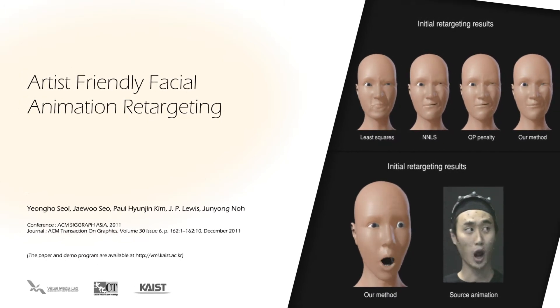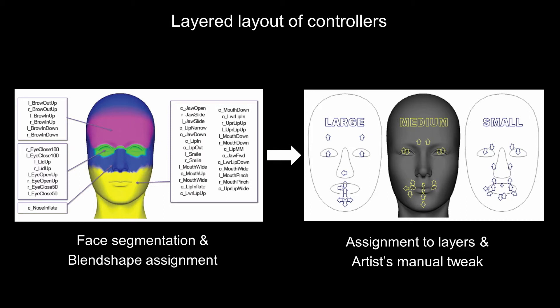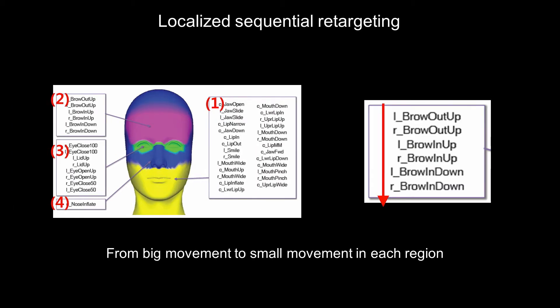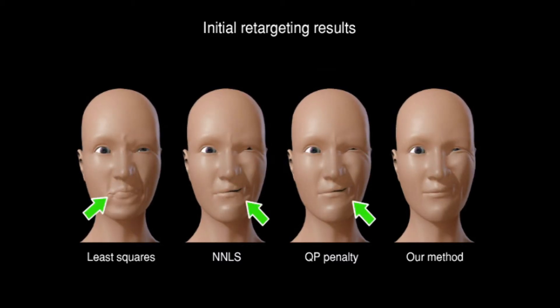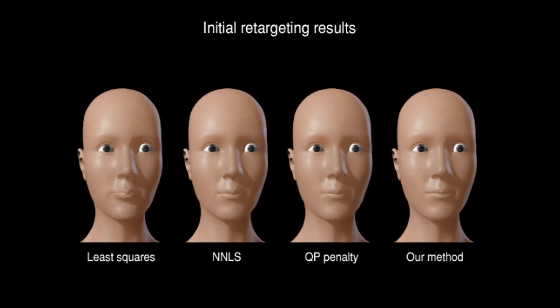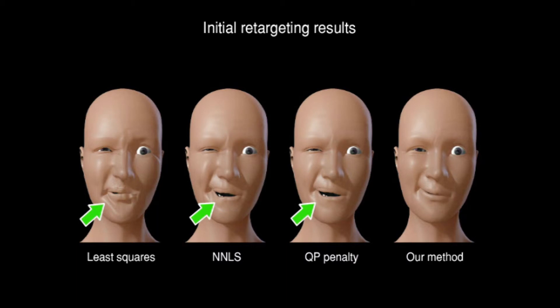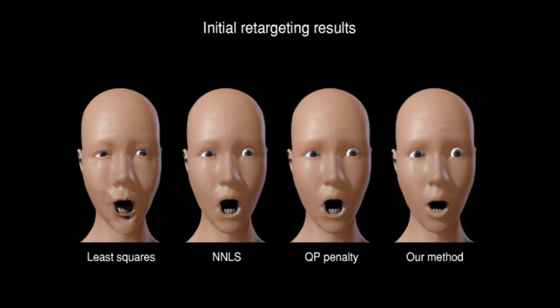This paper presents a novel facial animation retargeting system carefully designed to support the animator's workflow. Our retargeting system generates a similar set of blend shape weights to those that would have been produced by an animator, by rearranging the group of blend shapes into several sequential retargeting groups from big movement to small movement in each region. Least squares formulation shows high positive and negative weights. Non-sequential NNLS exhibits large weight values due to blind use of symmetric blend shapes, while QP Penalty shows canceling effects from symmetric blend shapes.